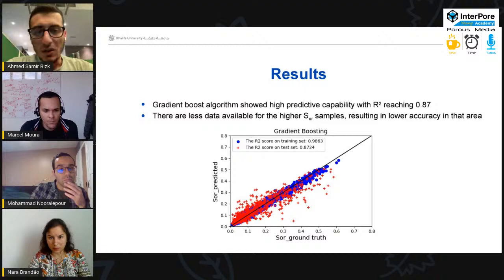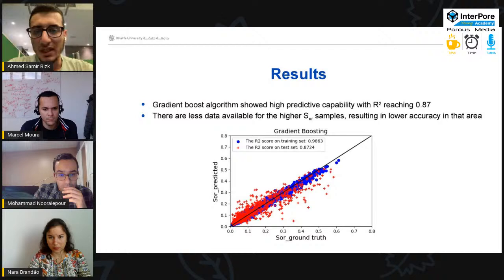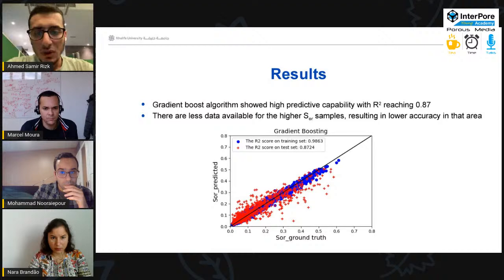With around 0.98 R-square in the training set and 0.87 in the testing set. Of course, if we look here at the part which represents the samples with high SOR, we'll find many deviations. But this because the limited number of samples that have high SOR values.